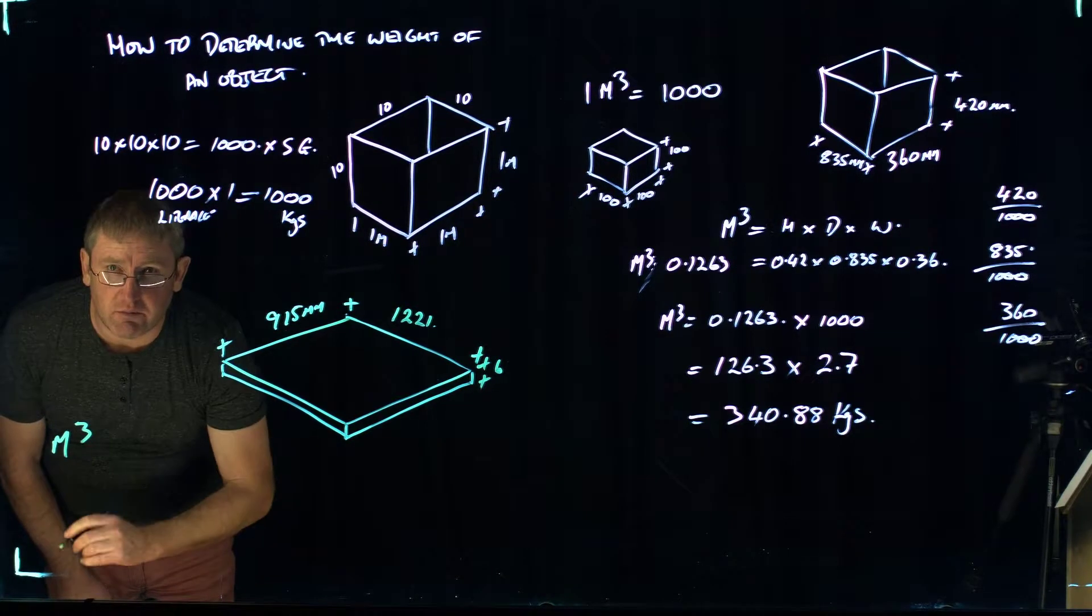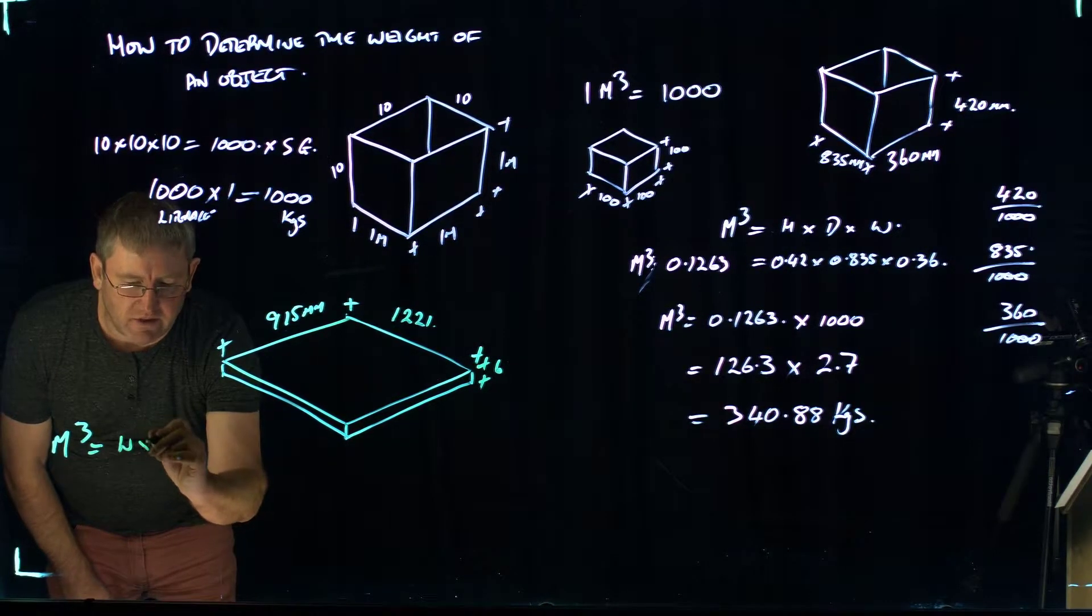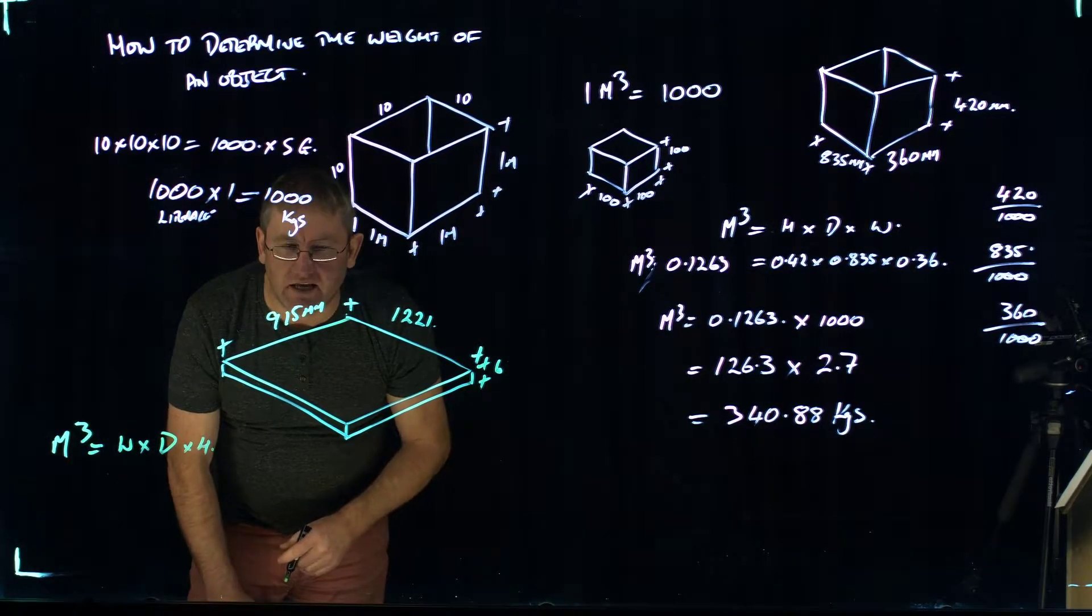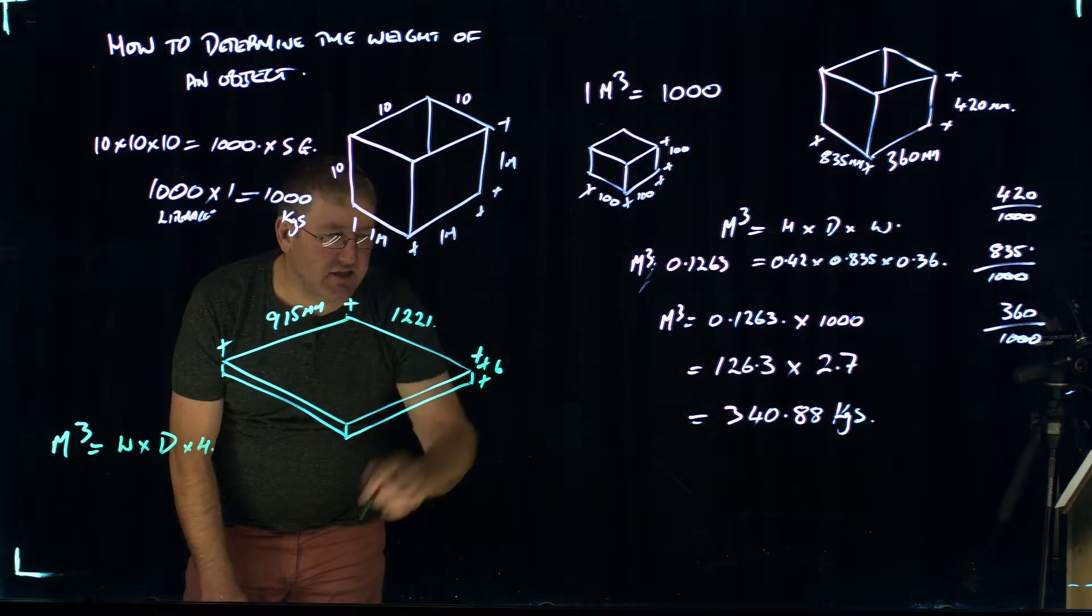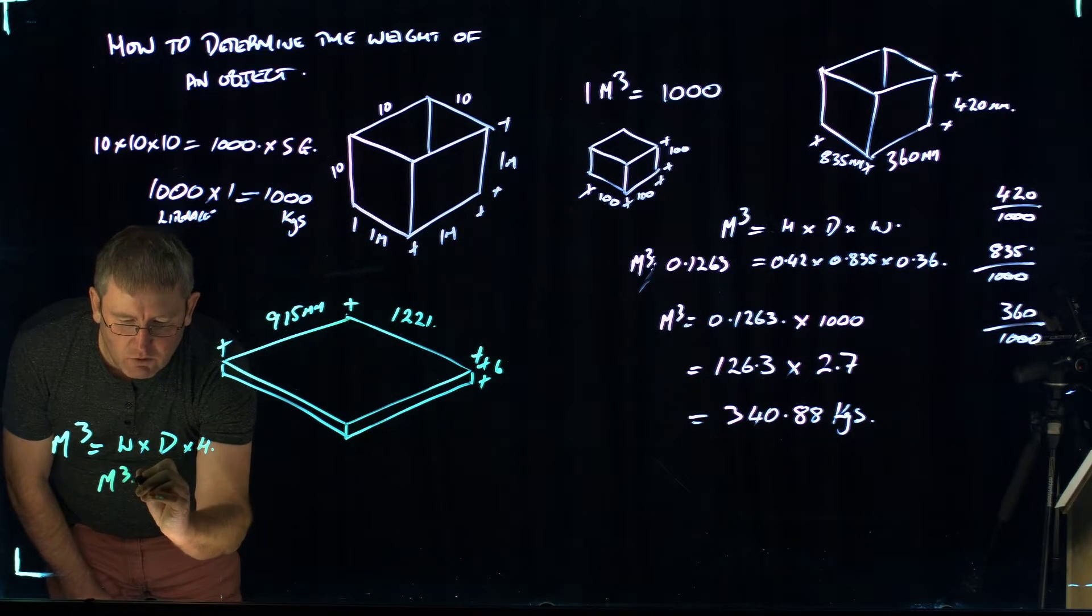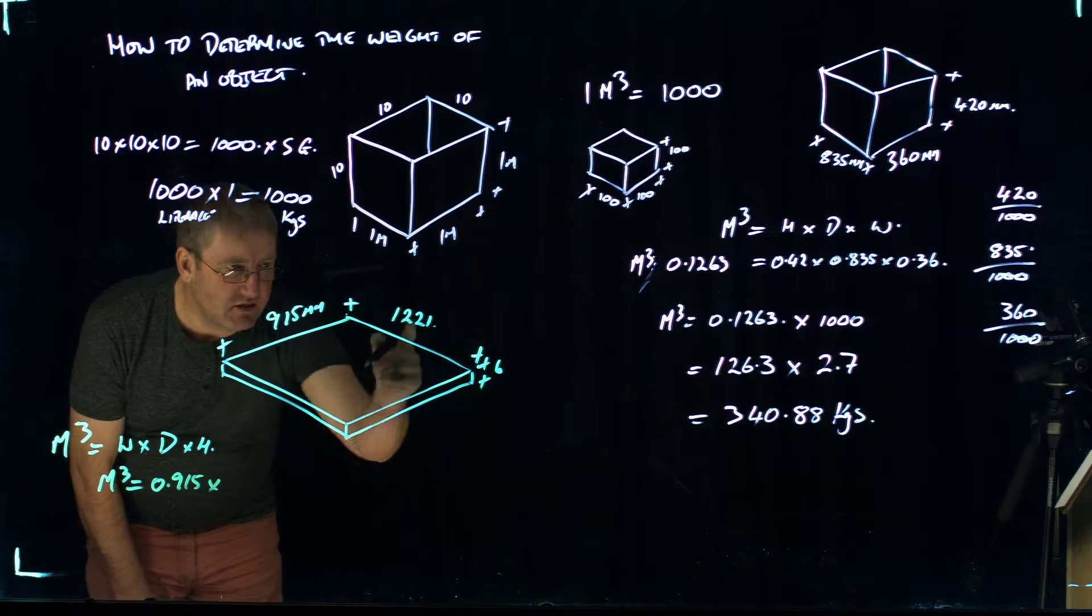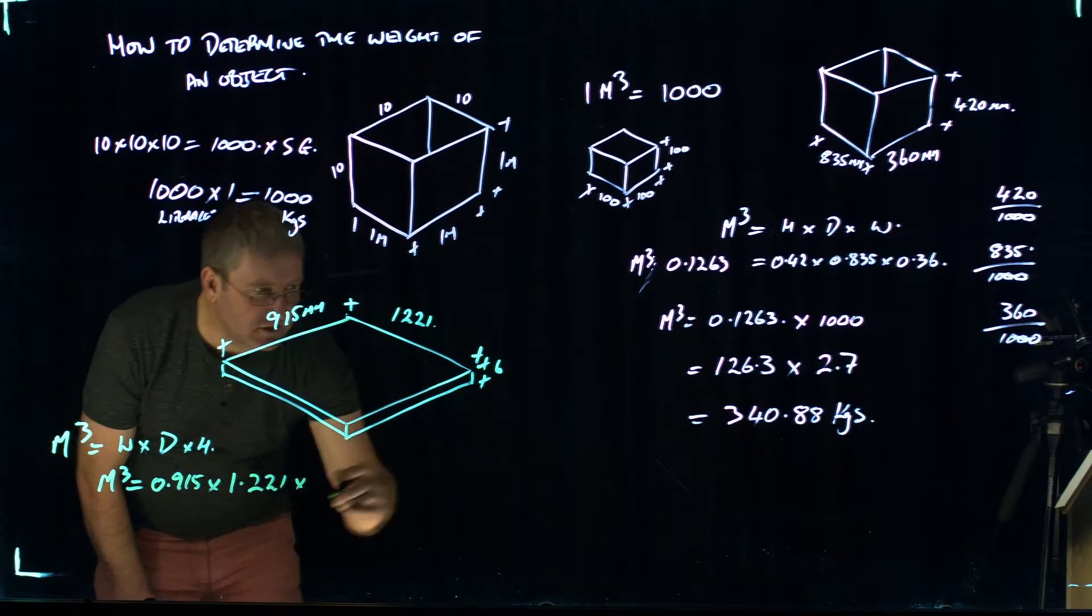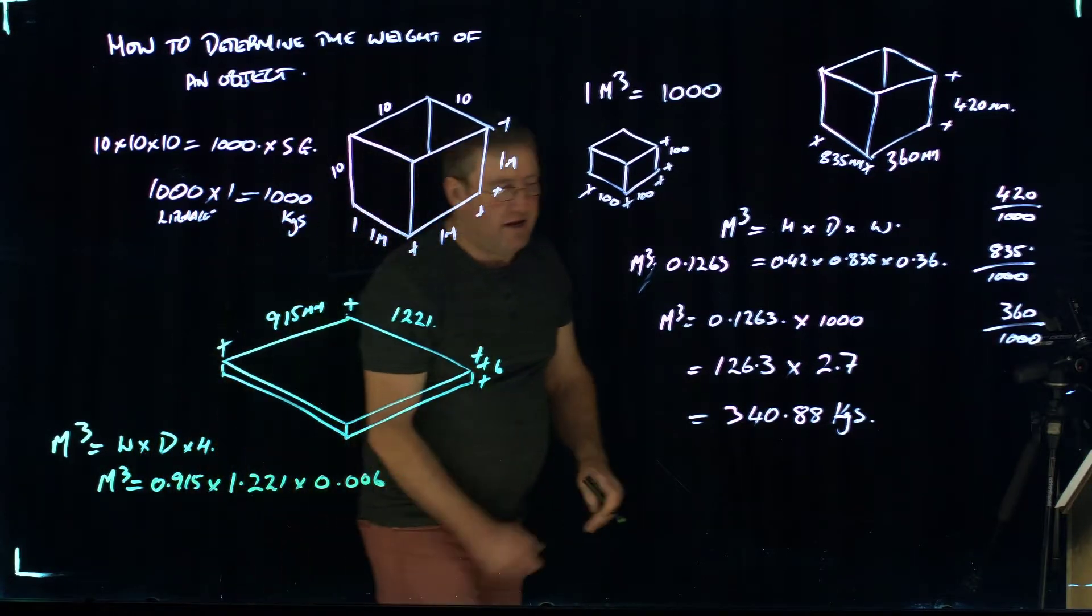So we have to work out the cubic capacity of the sheet for a start. And as I said, it's meters cubed. And in this case, it's the width times the depth times the height. And I want to convert all those to meters again. So we divide the 915 by 1,000, the 1221 by 1,000, and the 6 by 1,000. So meters cubed equals the width, 0.915 times the depth 1.221 times the thickness 0.006.